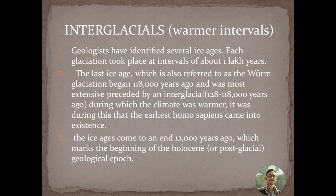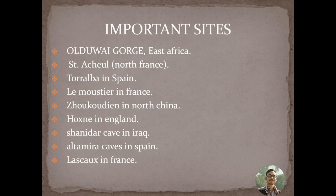The interglacials — or warmer intervals — were very important because they caused the ice ages. Geologists have identified several ice ages; each glaciation took place at intervals of about one lakh years. The last ice age, also referred to as the Würm glaciation, began 118,000 years ago and was most extensive, preceded by an interglacial during which the climate was warmer. It was during this time that the earliest Homo sapiens came into existence. The ice ages came to an end approximately 12,000 years ago, marking the beginning of the Holocene epoch, or the post-glacial geological epoch.